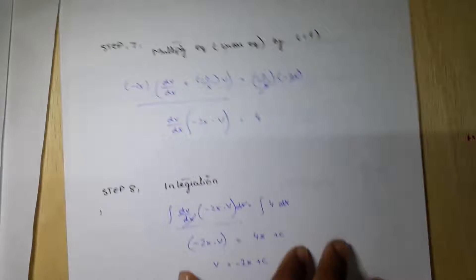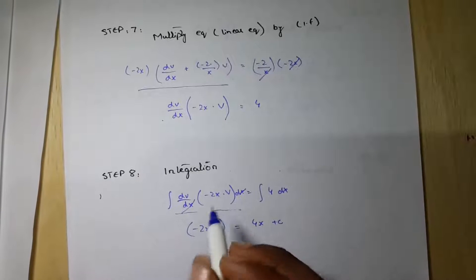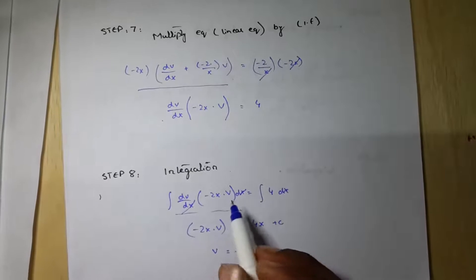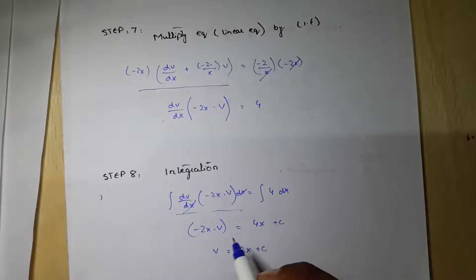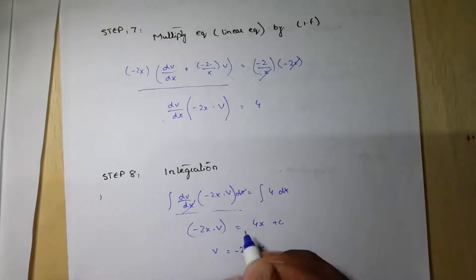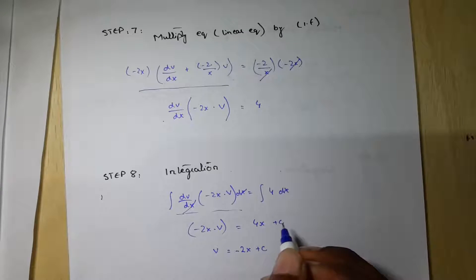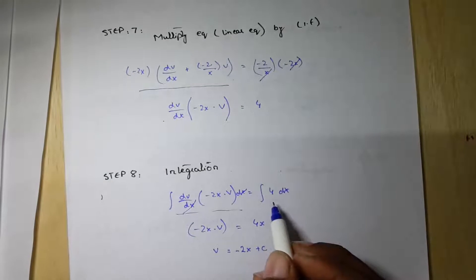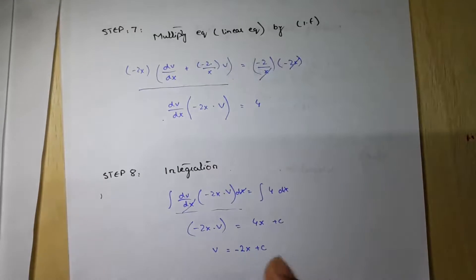Step 8: integration. Applying the integral sign, like terms cancel and 4x plus c will be the result of the integration. So v equals minus 2x plus c.